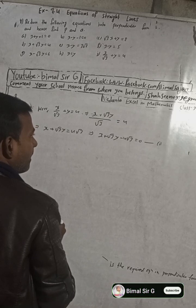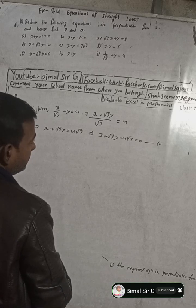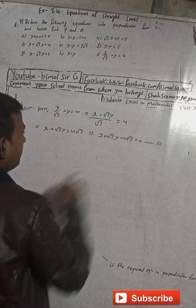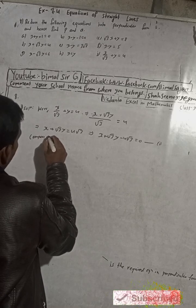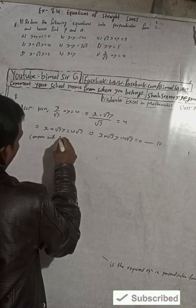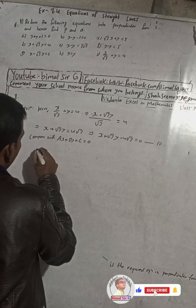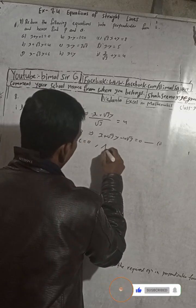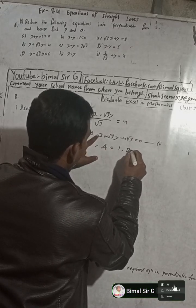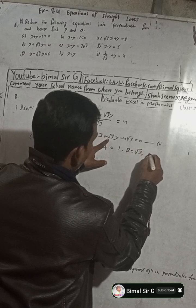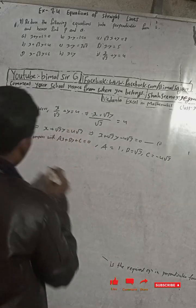Now comparing Equation 1 with the standard form ax + by + c = 0, we get: a = 1, b = √3, and c = -4√3.